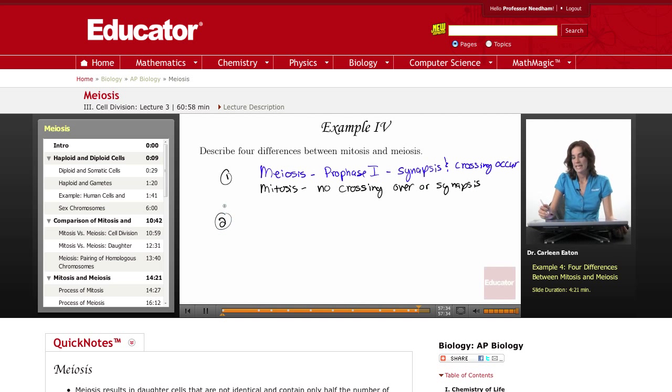Second difference, in meiosis there are two rounds of cell division. Meiosis I: prophase, metaphase, anaphase, and telophase I. And meiosis II: prophase, metaphase, anaphase, and telophase II.